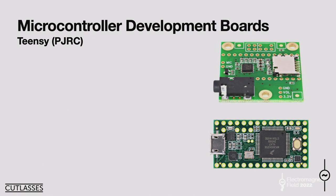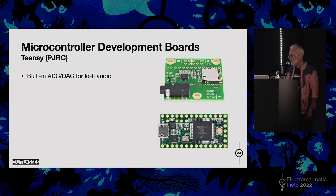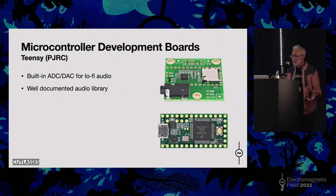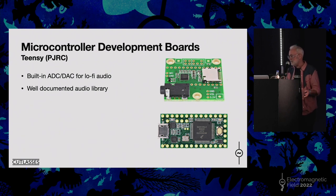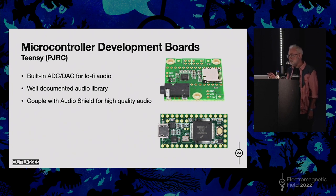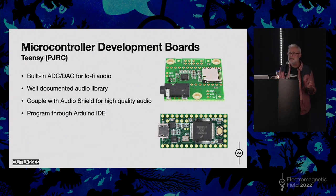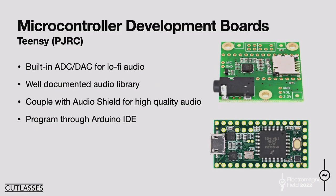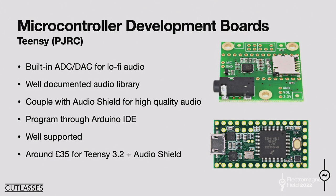First, let's talk about Teensy, which comes from a company called PJRC. It has an ADC and a DAC built in, so you can do lo-fi audio with it straight away — they're not dedicated audio components so they're a bit noisy, but fine to get started. The audio library is really well documented; they've been making these for years, and they're really stable, really good bits of hardware. Just above the Teensy is the audio shield, which has an audio codec for high-quality audio and an SD card reader. You can program it through the Arduino IDE. You can buy the Teensy 3.2 and the audio shield for about £35.